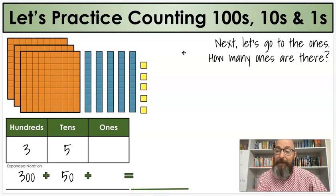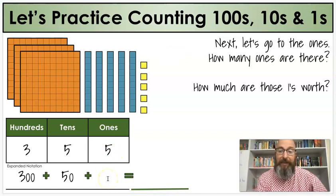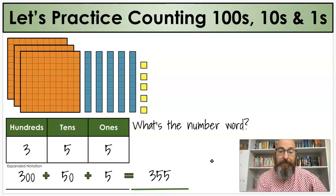Next, let's go to the ones. How many ones are there? Five again. And we know that whatever we put in the ones place automatically goes down here. So those ones are worth five. Let's put all this together, our expanded notation together. And we get our new number, 355. And what's the number word? 355.